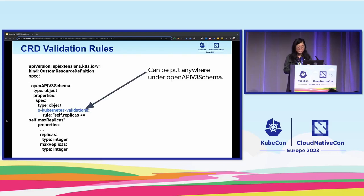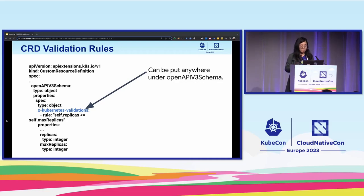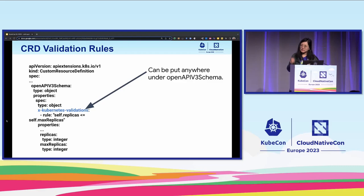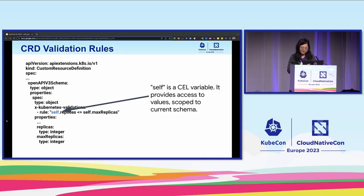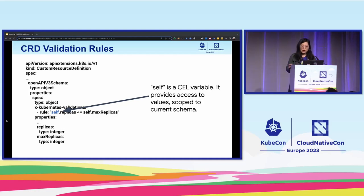All the magic is done through one single field: x-kubernetes-validations. As an extension field added to CRD, you can write it anywhere under OpenAPI v3 schema, and then start writing your CEL rules under this extension field. When creating or updating a custom resource, it will be validated against the rules you defined. In this example, we want to make sure the replicas number you set is no greater than the max replicas set. Inside your CEL rules, 'self' is a CEL variable providing access to the validation scoped to the current schema.